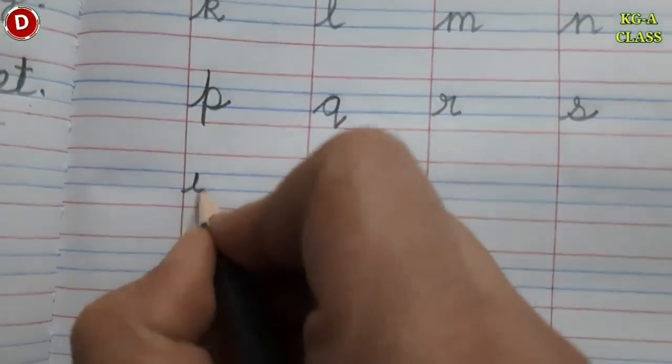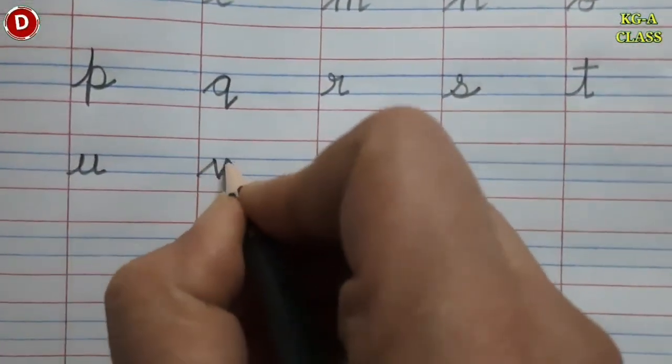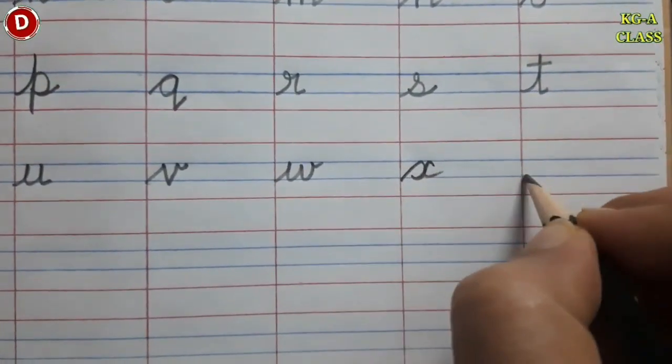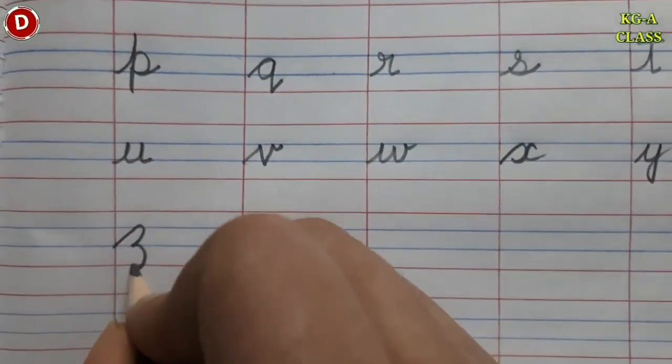Then comes cursive U, cursive V, cursive W, cursive X, cursive Y and then comes cursive Z.